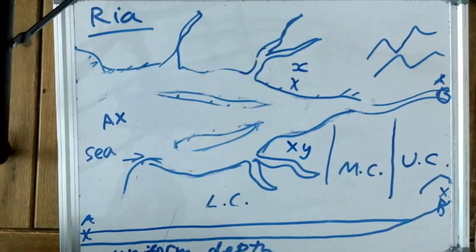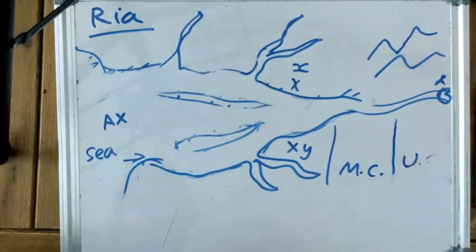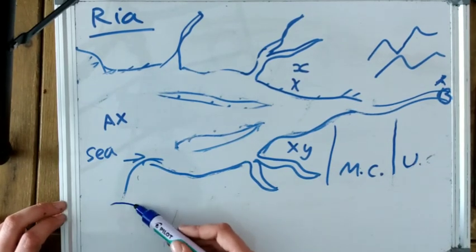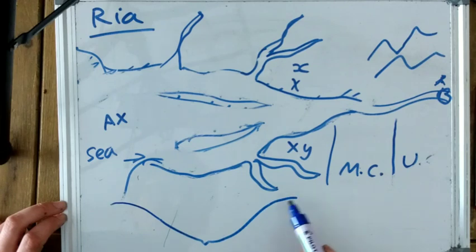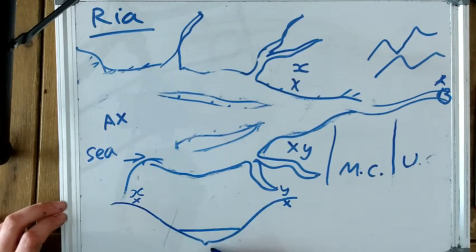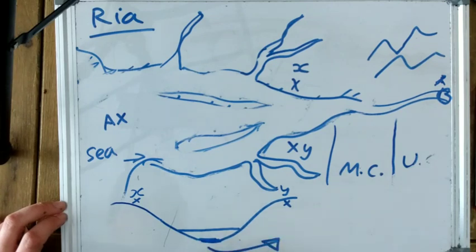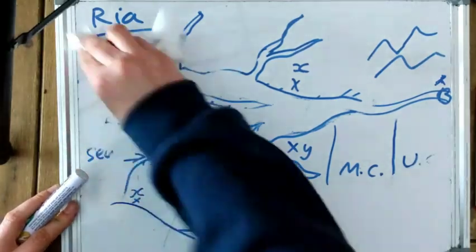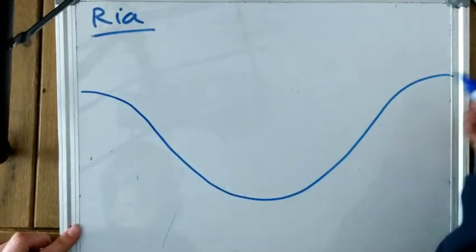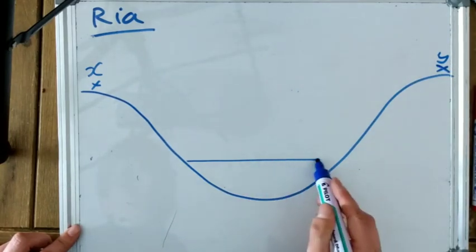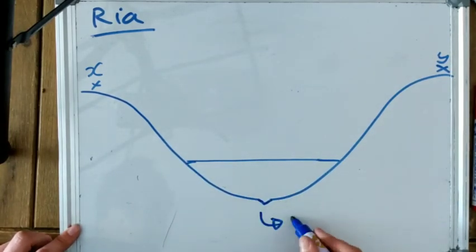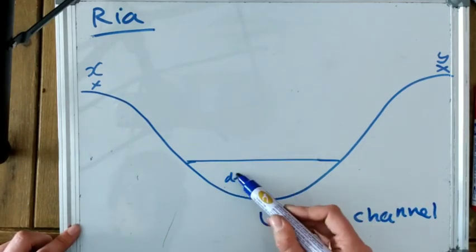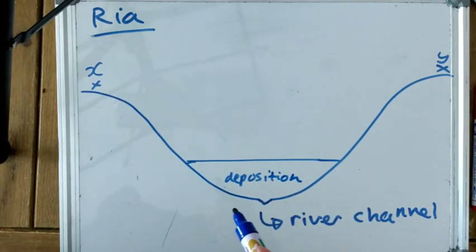Next we're going to look at the cross section. We have gently sloping valley sides because it's a V-shaped valley. The little dent in the middle is the previous river channel. As sea level rises, the rivers have less energy for erosion and more deposition happens because they're moving slower, so you get a lot of sediment deposits infilling the river channel at the bottom.